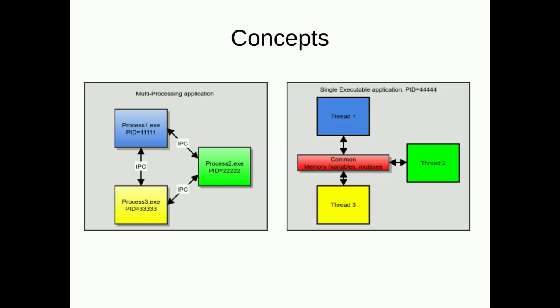Here are the core concepts. In a multiprocessing application, the application uses some kind of inter-process communication library, framework, or middleware, and has protocols for how binaries communicate with each other. In a single-executable application, multiple threads communicate via shared memory common to that one executable.